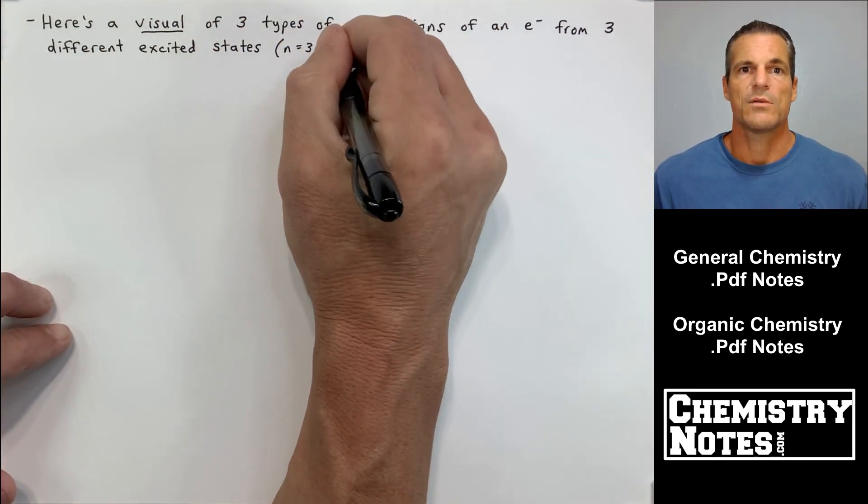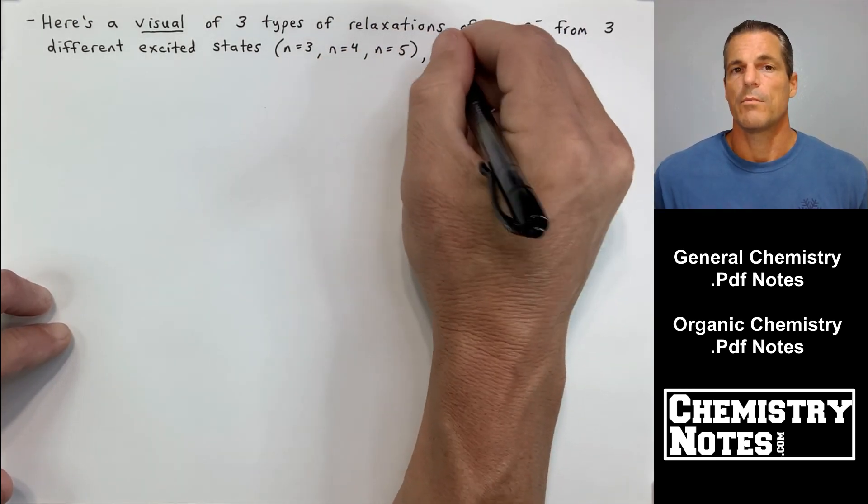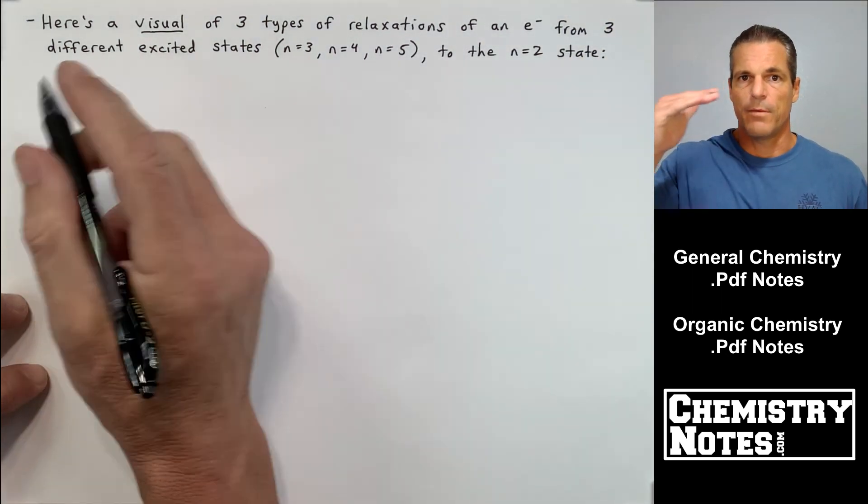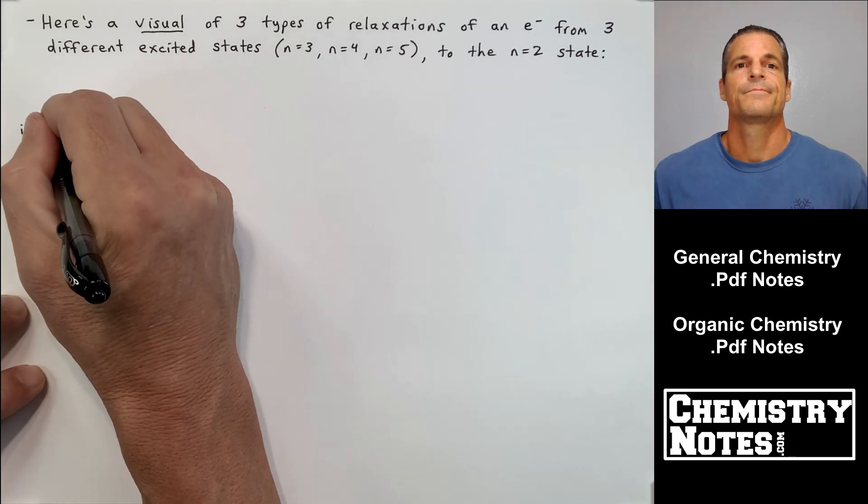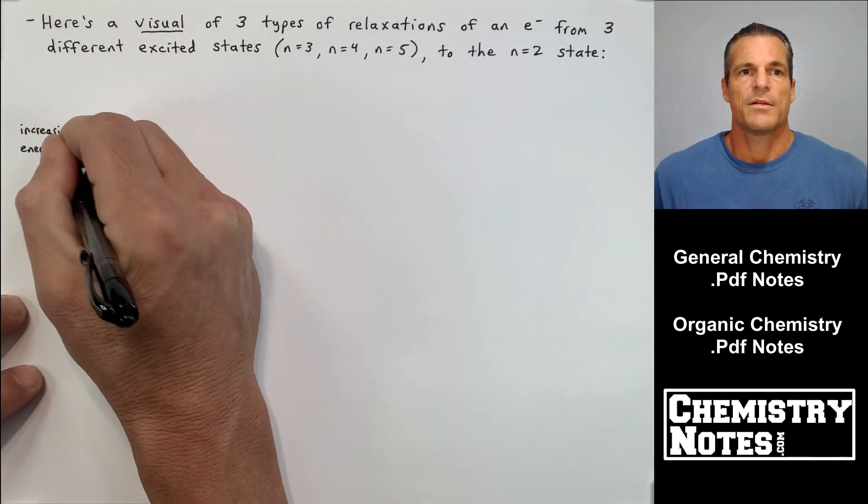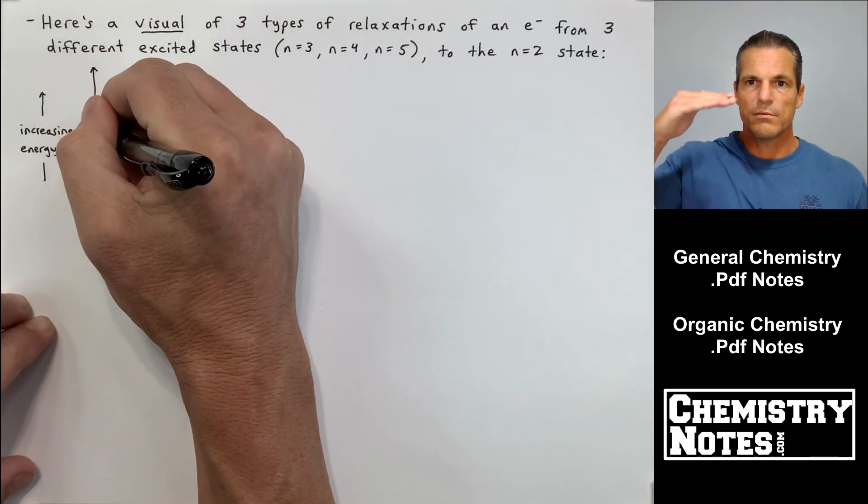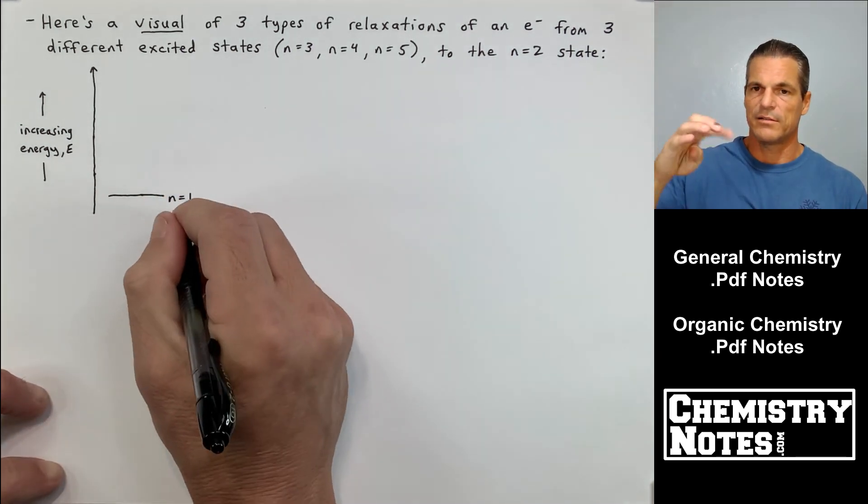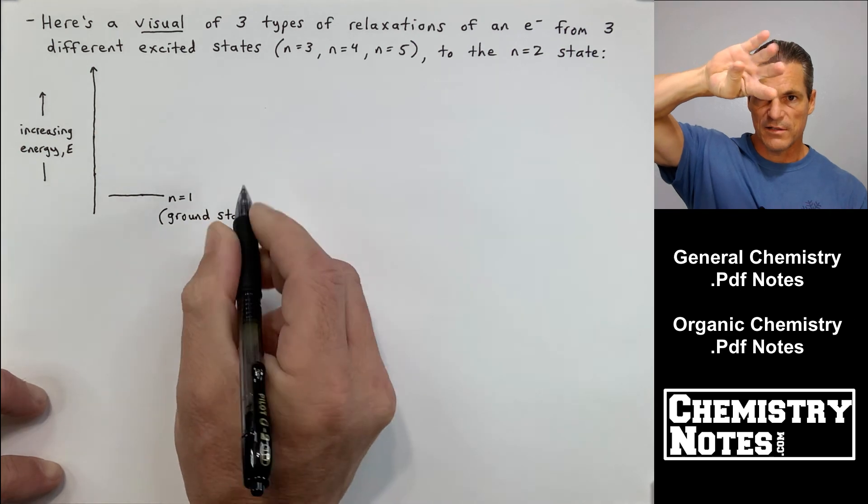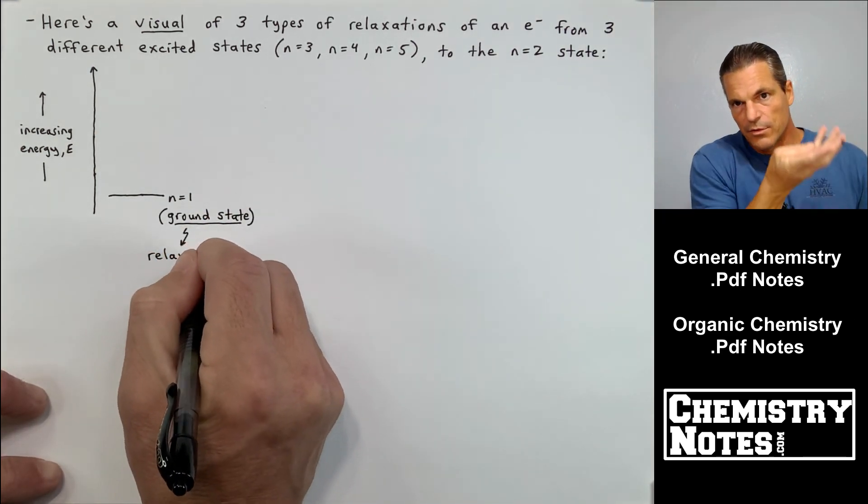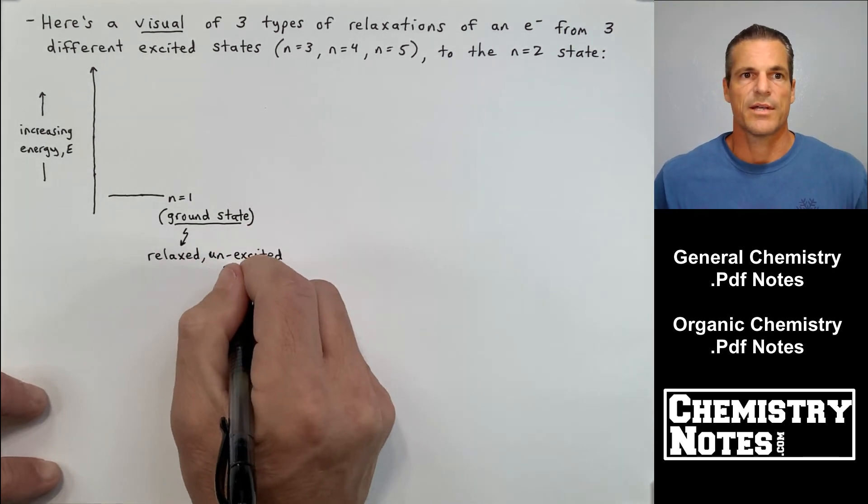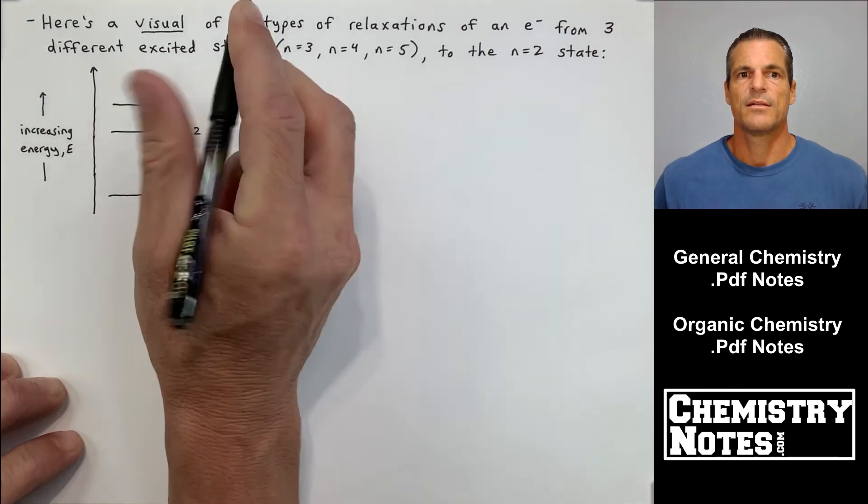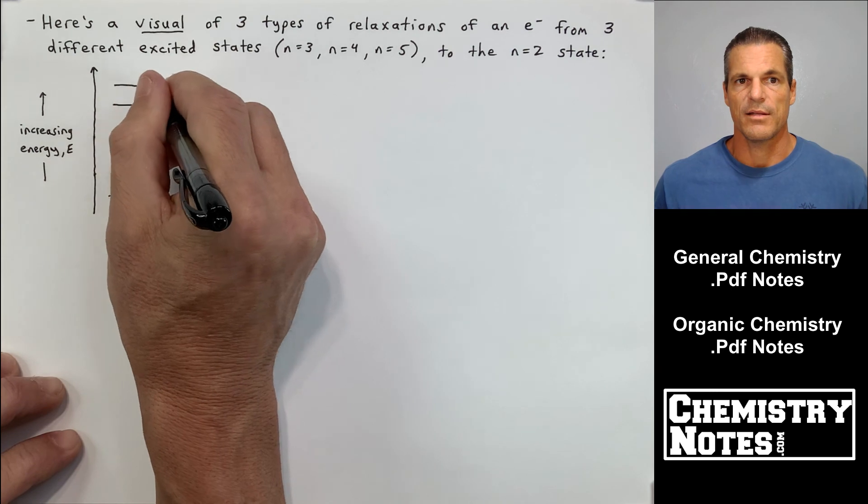Remember the ground state would be n equals 1. But these guys are going to relax not all the way down but they're going to fall back to the n equals 2 state. I'm going to draw first a vertical representation and then I'm going to take these lines and imagine like having a little rake toy in a sand pit and taking these four lines and drawing them all the way around the nucleus in a circle.